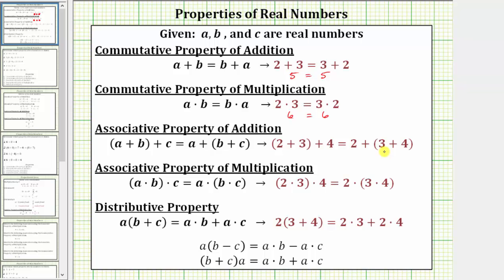We first simplify inside the parentheses. On the left, we first simplify two plus three, which is five. The left side simplifies to five plus four. On the right side, we simplify three plus four first, which is seven. The right side simplifies to two plus seven. Now determining the sums: five plus four equals nine, and so does two plus seven.